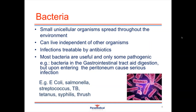Examples of different types of bacterial infections include E. coli, salmonella, streptococcus, TB or tuberculosis, tetanus, syphilis and thrush. Many medical conditions can have both a bacterial and a viral form. An example is meningitis — inflammation of the meninges around the brain and spinal cord — which can be caused by either a bacterial or viral infection, defined as bacterial meningitis or viral meningitis respectively.